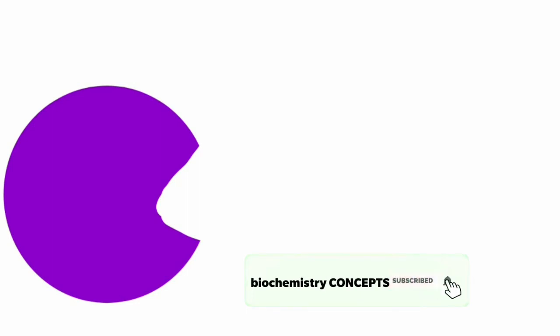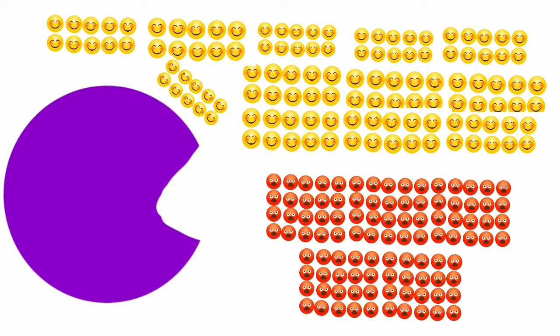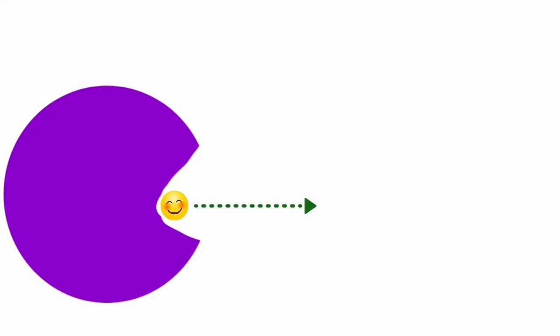In situation two, we start with the same enzyme, 10 substrate molecules and 100 competitive inhibitor molecules. Now the concentration of substrate is increased to 1000 molecules, while the inhibitor remains at 100. Here the substrate concentration is very high — more than the inhibitor — so the substrate dominates and binds with the active site of the enzyme. As more enzyme-substrate complex forms, it produces the product. So when the concentration of substrate is increased, this inhibition can be reversed.